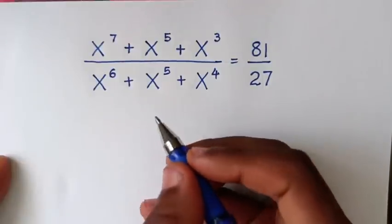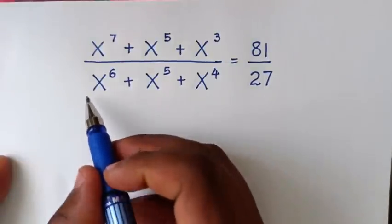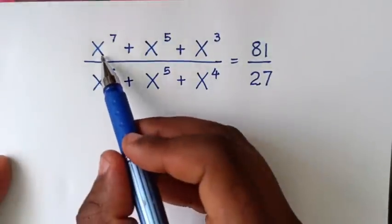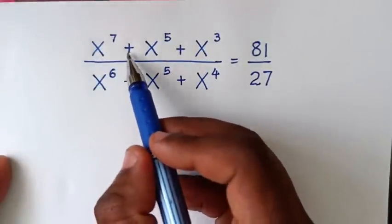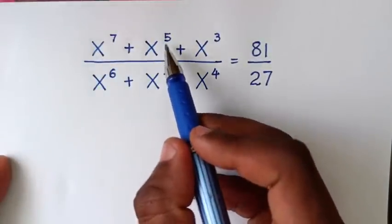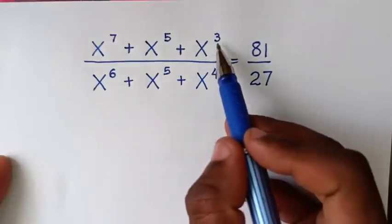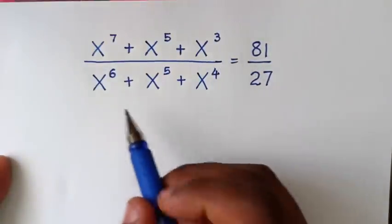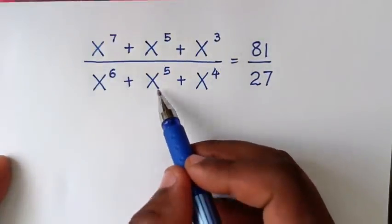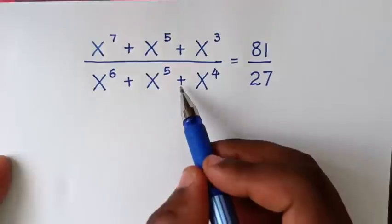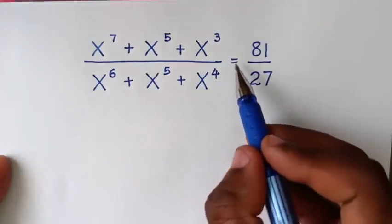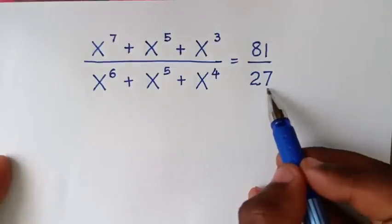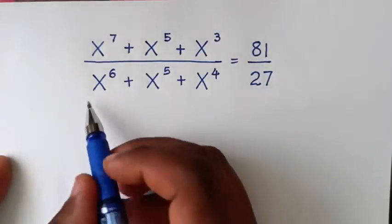Hello, you are welcome to solve this math problem: (x⁷ + x⁵ + x³) / (x⁶ + x⁵ + x⁴) = 81/27. We need to find the values of x from this equation.